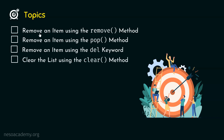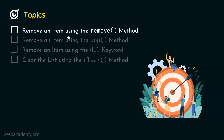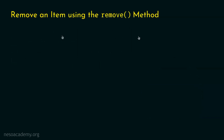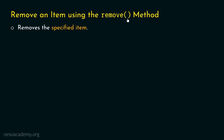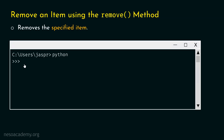Let's start with the first topic: removing an item using the remove method. The remove method removes the specified item. So if we pass an item to this remove method, it will remove that item from the list. Let's open the command prompt and activate the Python interactive shell.